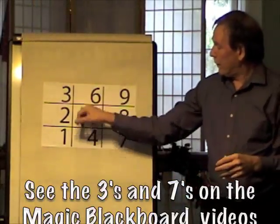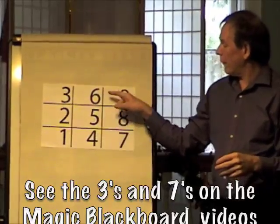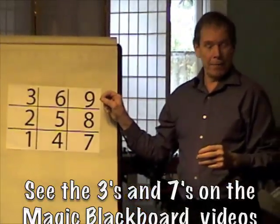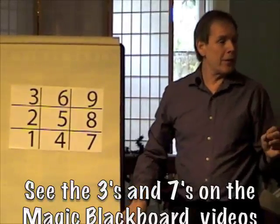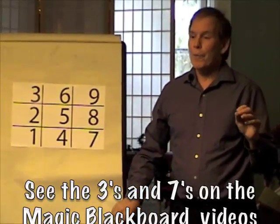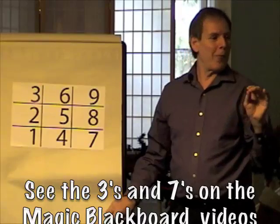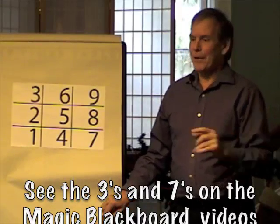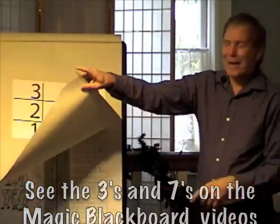This is a tic-tac-toe square with the numbers 1, 2, 3, 4, 5, 6, 7, 8, 9 in it. And in 3 seconds I can create the 3s. But if you want to go to YouTube, Mr. Numbers, or my website rightbrainmath.com, you'll see how to do that. But I'm not going to do that here.